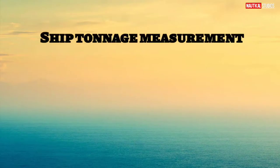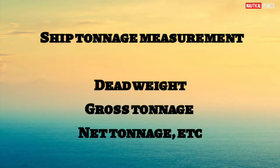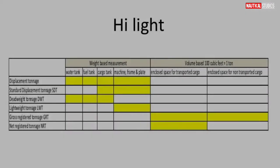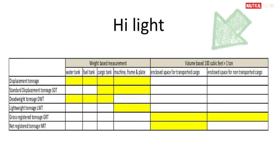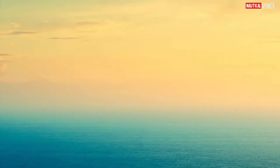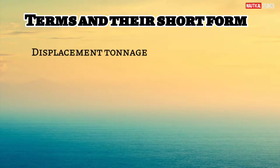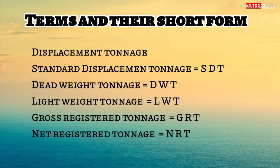Hello guys, Sorob here. In today's video we'll discuss ship tonnage measurement: dead weight, gross tonnage, net tonnage, etc. Ship measurement highlights include weight-based measures — water tank, fuel tank, cargo tank, machine frame and plate — and volume-based measures — enclosed space for transported cargo and enclosed space for non-transported cargo. Key terms and their short forms: displacement tonnage, standard displacement tonnage (SDT), dead weight tonnage (DWT), lightweight tonnage (LWT), gross registered tonnage (GRT), and net registered tonnage (NRT).